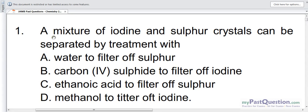The question goes, a mixture of iodine and sulfur crystal can be separated by treatment with A. water to filter off sulfur, B. carbon 4 sulfide to filter off iodine, C. ethanoic acid to filter off sulfur, D. methanol to filter off iodine.